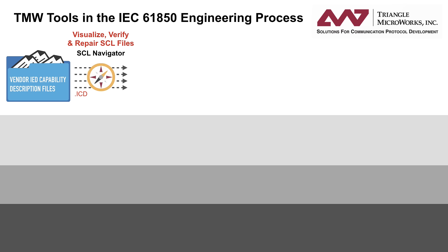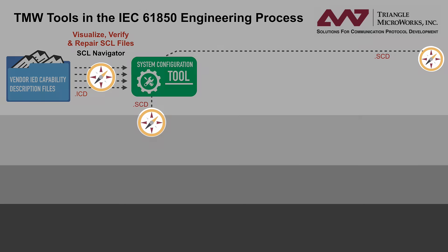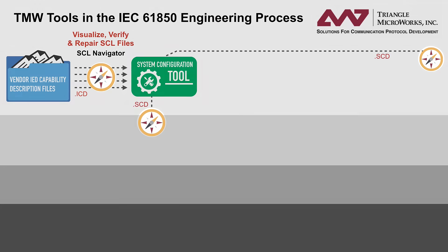SCL Navigator contains a 61850-AWARE editor that provides a structured environment for compliant SCL file editing. It can be used each time a new SCL file is generated to inspect the new file for changes, check for errors, and repair any issues that may prevent the next tool from processing the file. The Navigator icon shows each time it can be used in the 61850 engineering process.